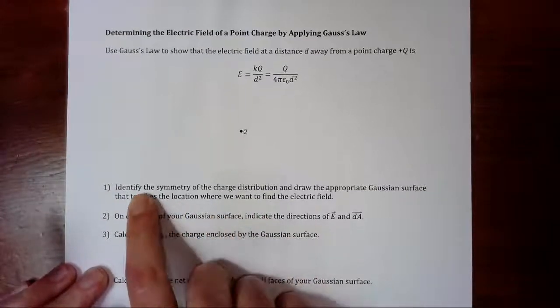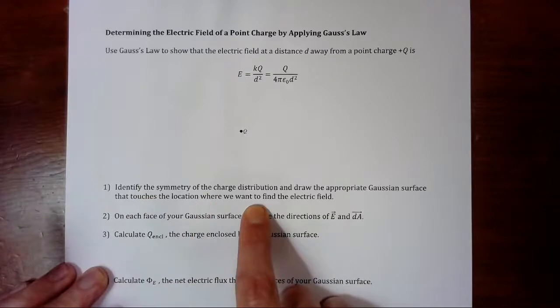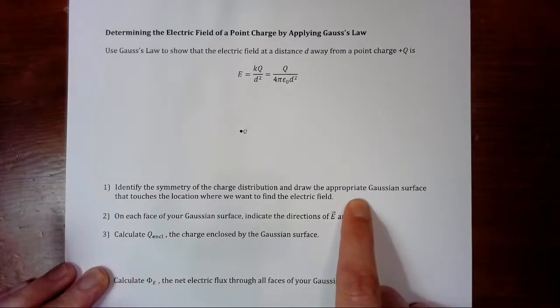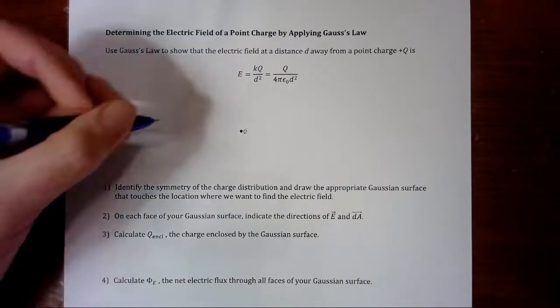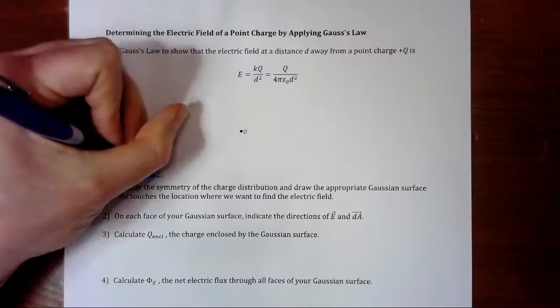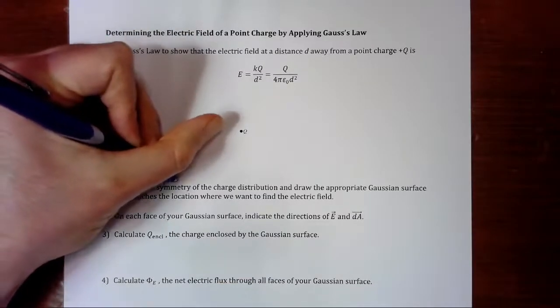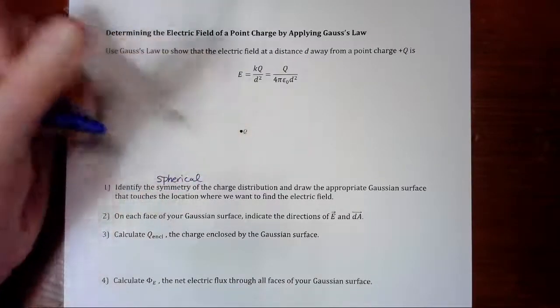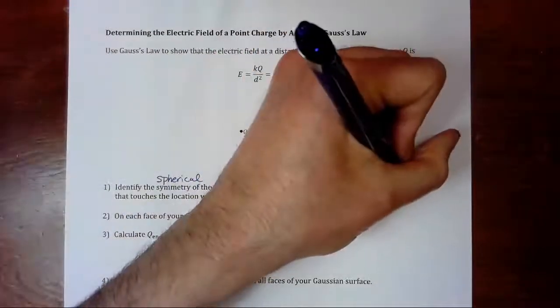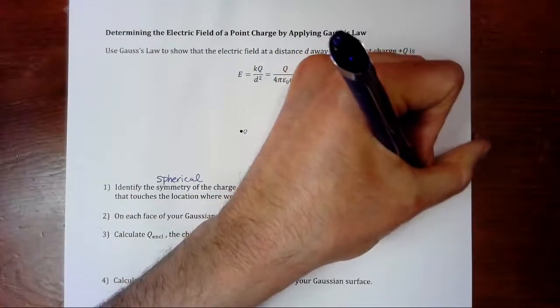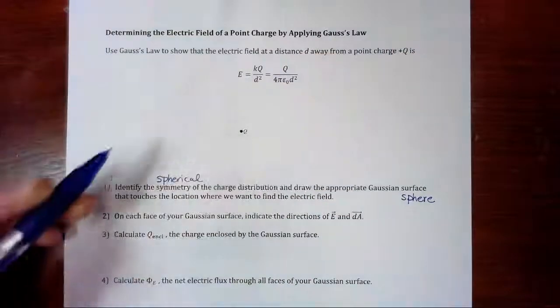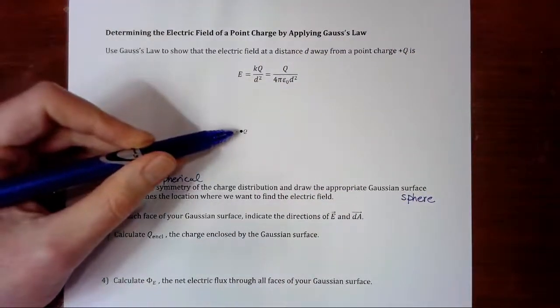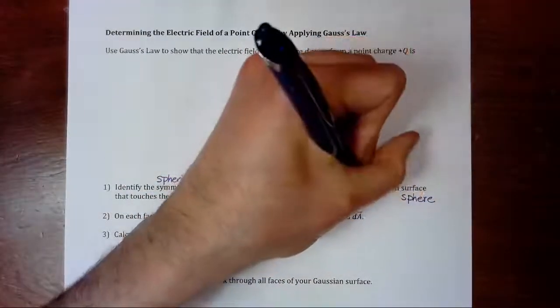First step, identify the symmetry of the charge distribution and draw the appropriate Gaussian surface. So, this is spherical symmetry, which means our appropriate Gaussian surface is going to be a sphere that's concentric with the charge. So it's a concentric sphere.